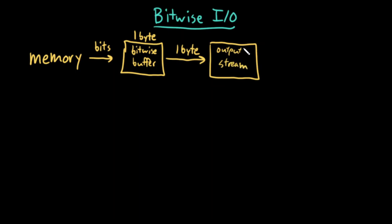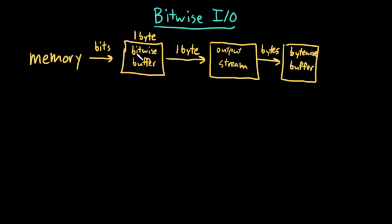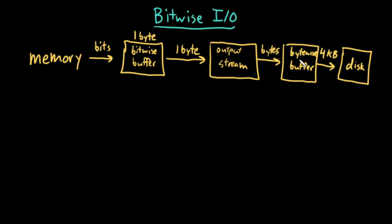Once I write that single byte to my output stream, as normal, the output stream will write bytes to a bytewise buffer — I'm going to call it a bytewise buffer this time to distinguish it from our custom bitwise buffer. And then, just like normal, it'll write these large chunks, once the bytewise buffer is full, to disk. So if you just ignored that the bits-to-bitwise-buffer step existed, it's just: memory, one byte at a time to an output stream, which writes to a bytewise buffer, which writes to disk — that was our original bytewise I/O workflow.